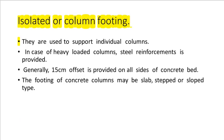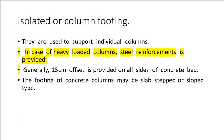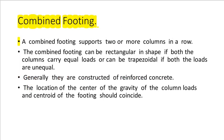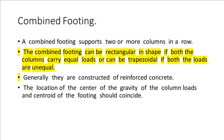Isolated or column footings are used to support individual columns. In case of heavily loaded columns, steel reinforcement is provided. Generally, 15 centimeters offset is provided on all sides of the concrete bed. The footing of concrete columns may be slab, stepped, or sloped type.